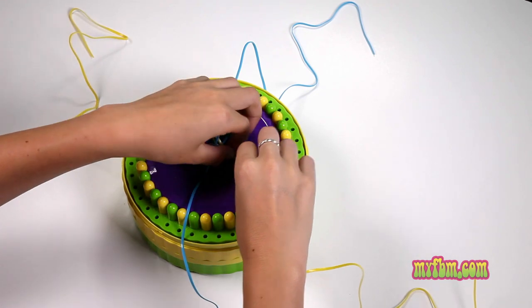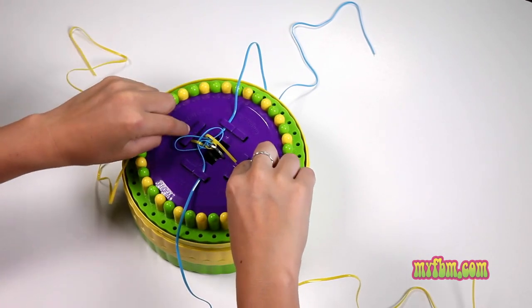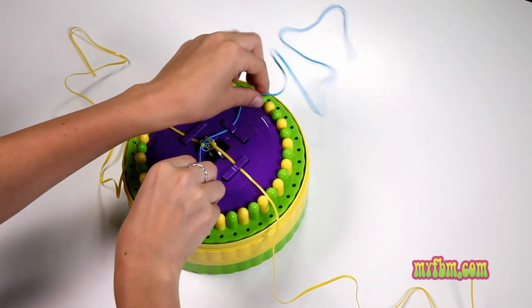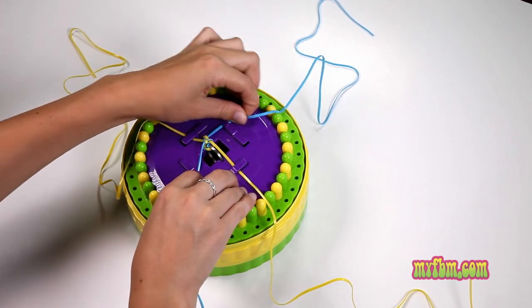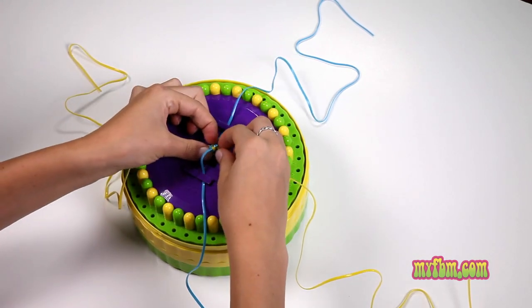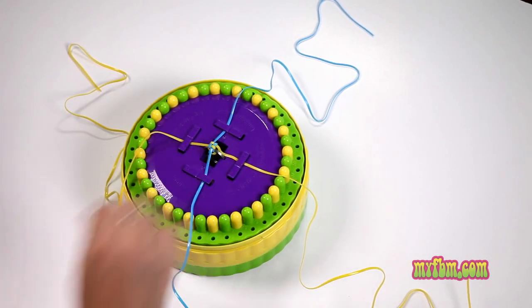Pull your yellow strings tighter, and then pull your blue strings tighter. And you can keep pulling on both sides nice and tight. You'll see your next box knot form on top.